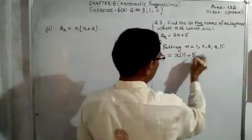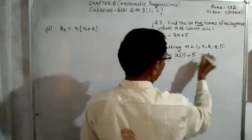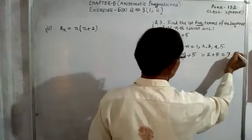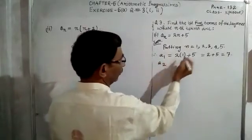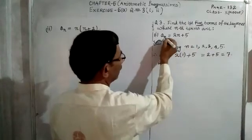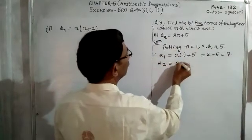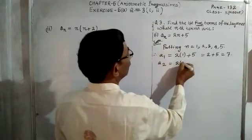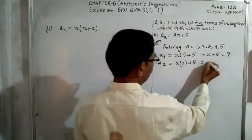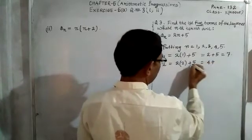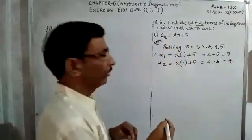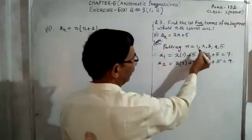So a₁ = 2(1) + 5. That will be the first term. 2 into 1 is 2, plus 5 is equal to 7. And when n is equal to 2, a₂ = 2(2) + 5. Multiply: 2 times 2 is 4, plus 5 is equal to 9.